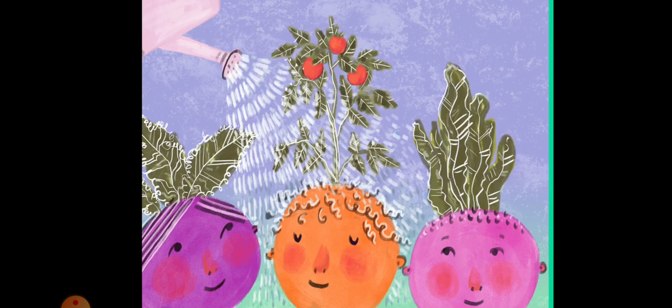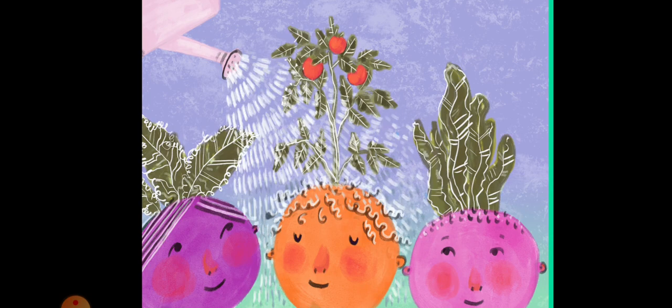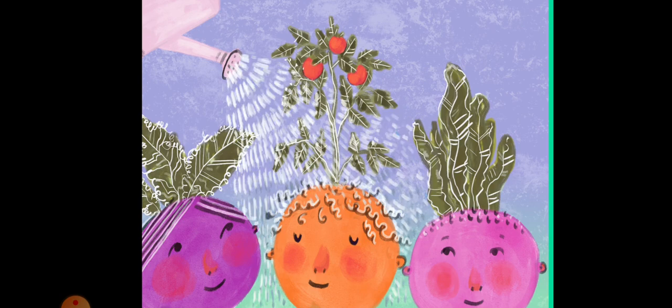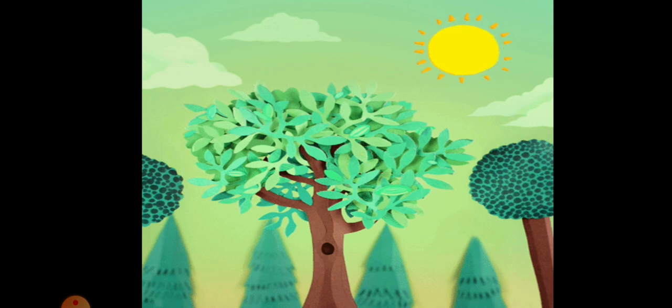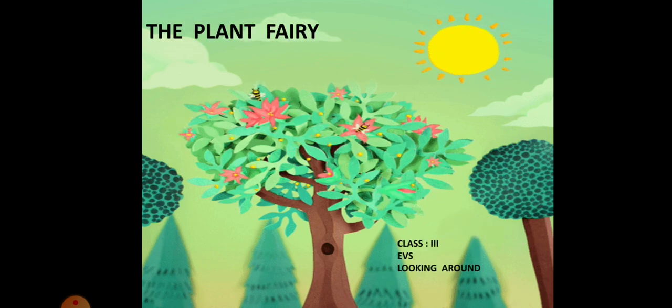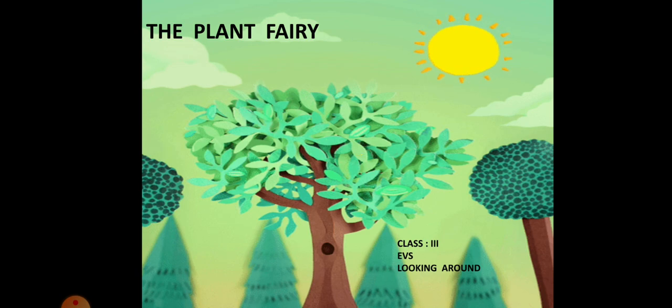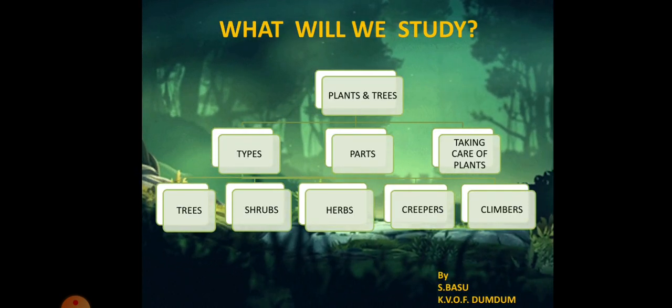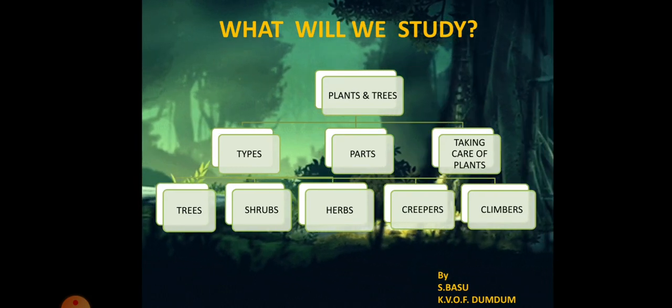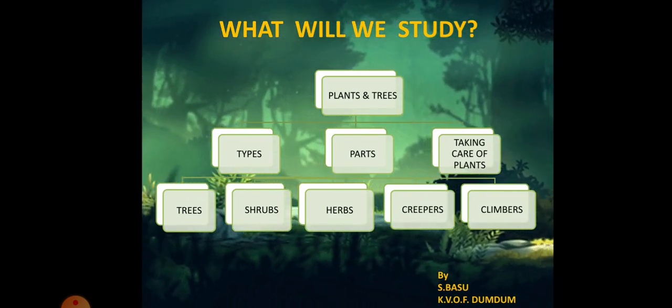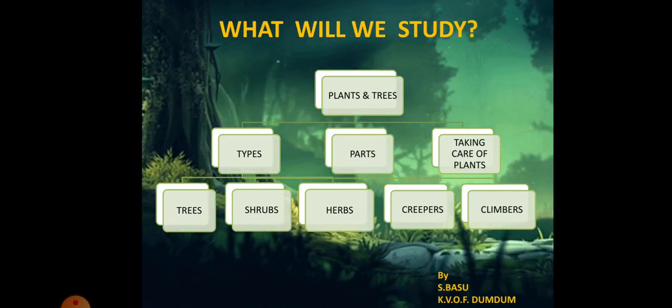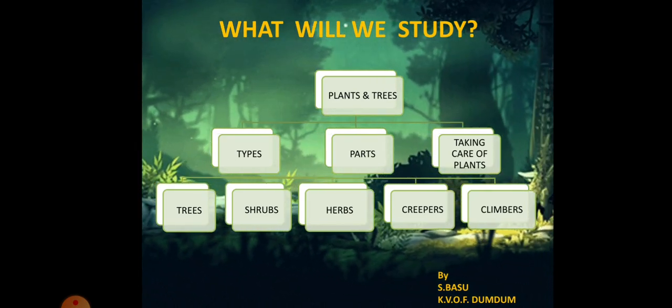Plants are also living things. They live and they survive. They need things to live and nutrients to grow healthy. So plants are also to be taken care of. So in this video, I will be sharing the lesson The Plant Fairy. This is the second lesson of your textbook Looking Around. Now what will we study? Here we will be studying about the plants and the trees, the types of the plants and the trees, their parts and taking care of plants.